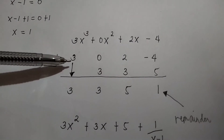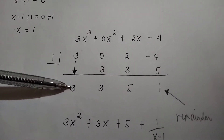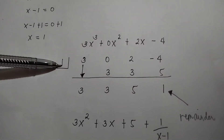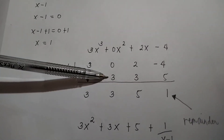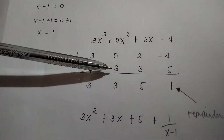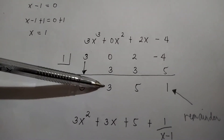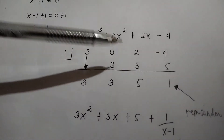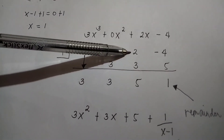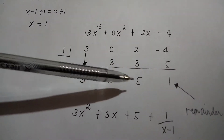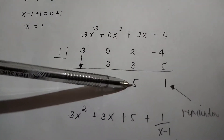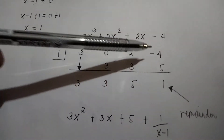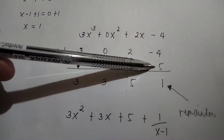Bring down 3. Then 3 times 1 is 3, write it here. Then 0 plus 3 is 3. Then 3 times 1 is 3, write it here. Then 2 plus 3 is 5. Then 5 times 1 is 5, write it here. Then negative 4 plus 5 is 1.